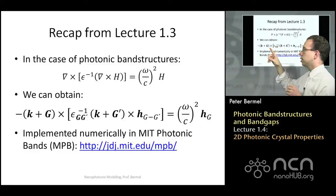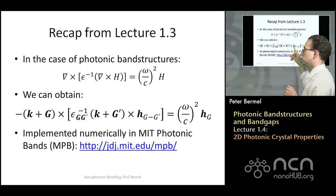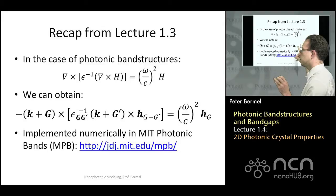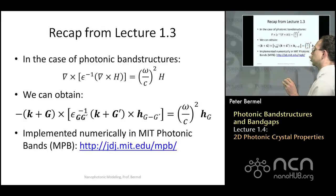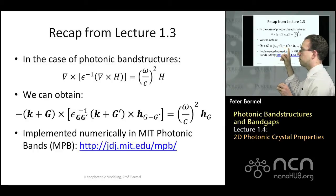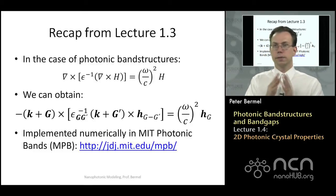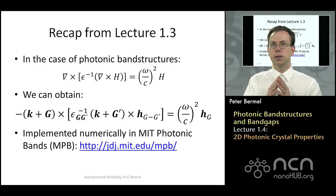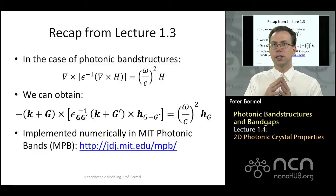That gives rise to this equation where you have individual elements of the h column vector, which captures the Fourier sum of all the total magnetic fields. That's equated to another element hg, and epsilon g, g-prime connects different components of the magnetic fields in Fourier space to one another. This solution is already implemented numerically in MIT Photonic Bands, and NanoHub itself has an MPB version already implemented, so you can run it directly from your web browser.